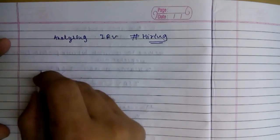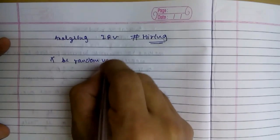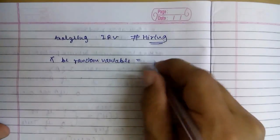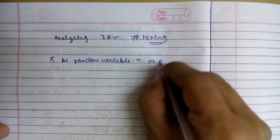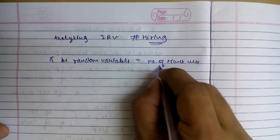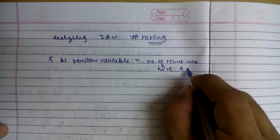So let x be the random variable that is the number of times we hire, that denotes we hire a new assistant.